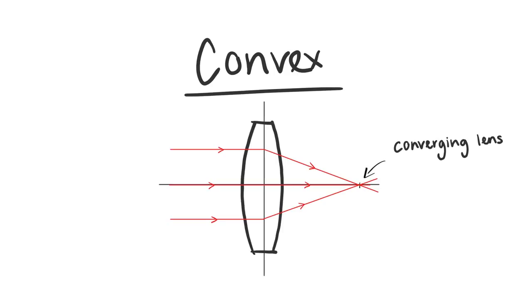This point is called F for focal point. You can find the focal point on both sides, as the light can shine through the lens from both sides also. The distance from the center of the lens to F is called focal length. We usually shorten it with a lowercase f.